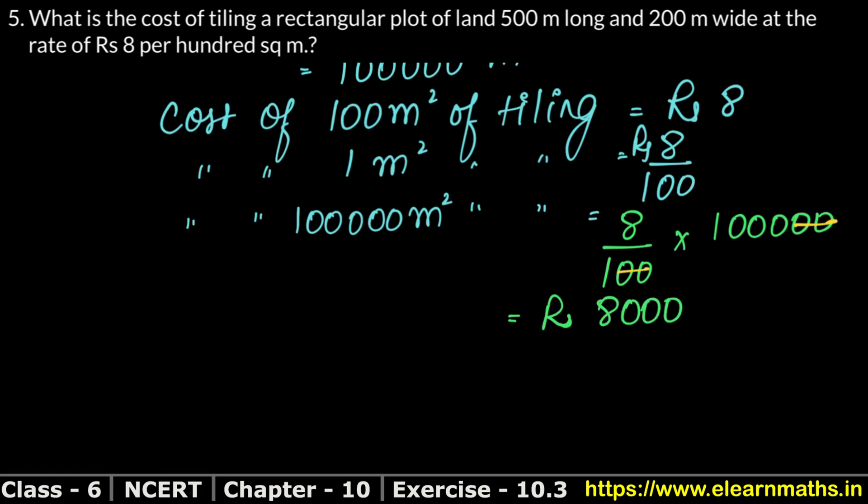So we found that the cost of tiling in a rectangular plot is Rs. 8,000. That is the answer.